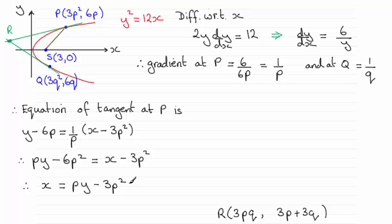That means the equation of the tangent at Q must take on a similar form, only where there's a P, there's going to now be a Q. So the tangent at Q has an equation X equals QY minus 3Q squared.